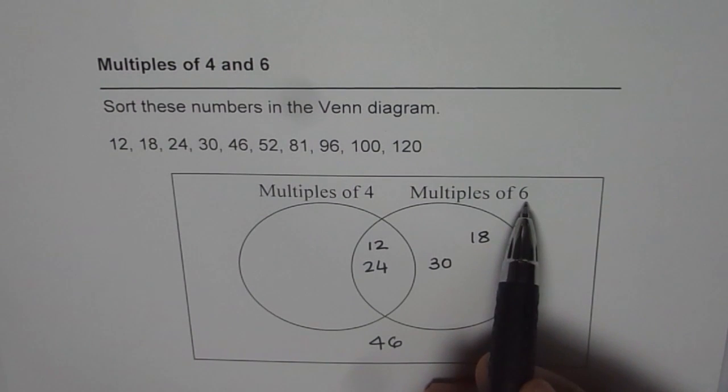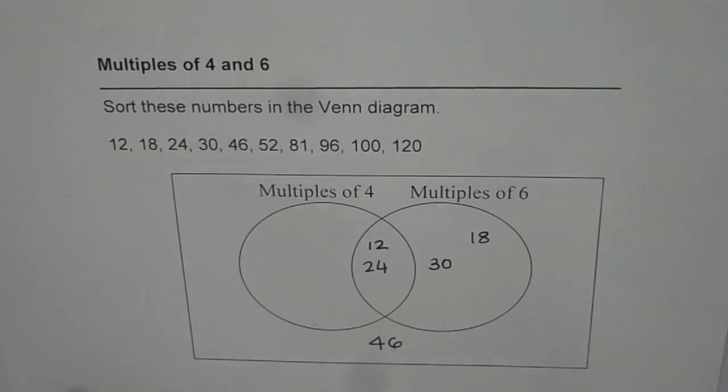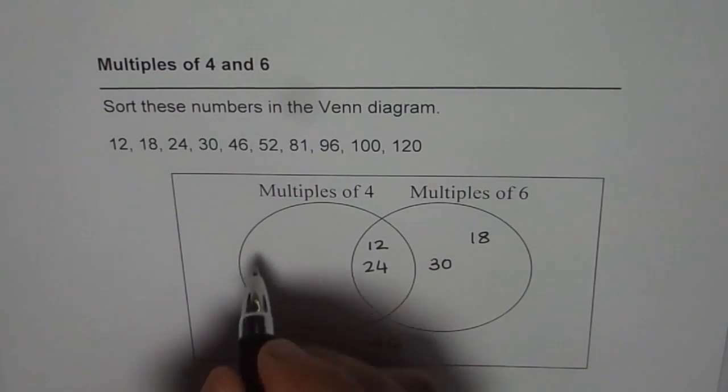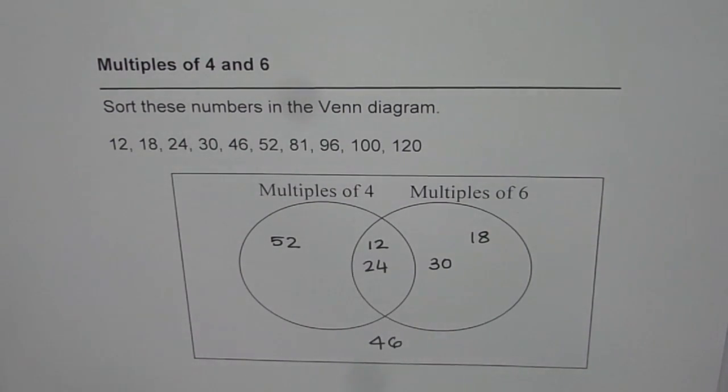6 is 2 times 3. Remember that. But can you divide 52 by 3? 5 plus 2 is 7—you cannot. So it is just a multiple of 4. It comes on the left side with multiples of 4.